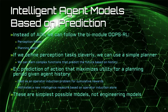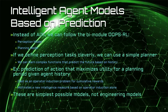We now introduce intelligent agent models based on prediction. Instead of AIXI, we can follow the bimodule OOPSRL, which consists of a perception model and a planning model. If we define perception tasks cleverly, we can use a simple planner. We can learn complex functions that predict the future based on history. As an example, we can predict the action that maximizes the cumulative utility for a planning period given agent history. We can cast it as an operator induction problem for cumulative rewards, where we infer the most likely cumulative reward for the agent's history and a given action. This simple model motivates a new intelligence measure based on operator induction alone. These are merely the simplest possible models, and there are many ways to cast these problems. These are not engineering models, which will likely include a lot of machine learning submodels combined in a practical way. However, it helps us to consider what we have to do at the minimum to make a general-purpose intelligent agent work at all.